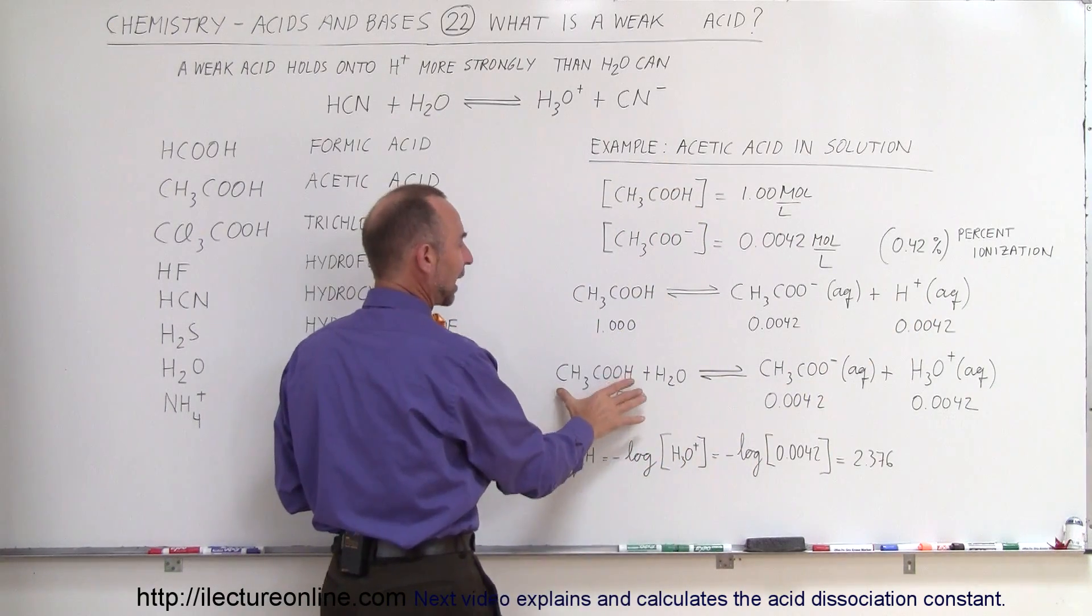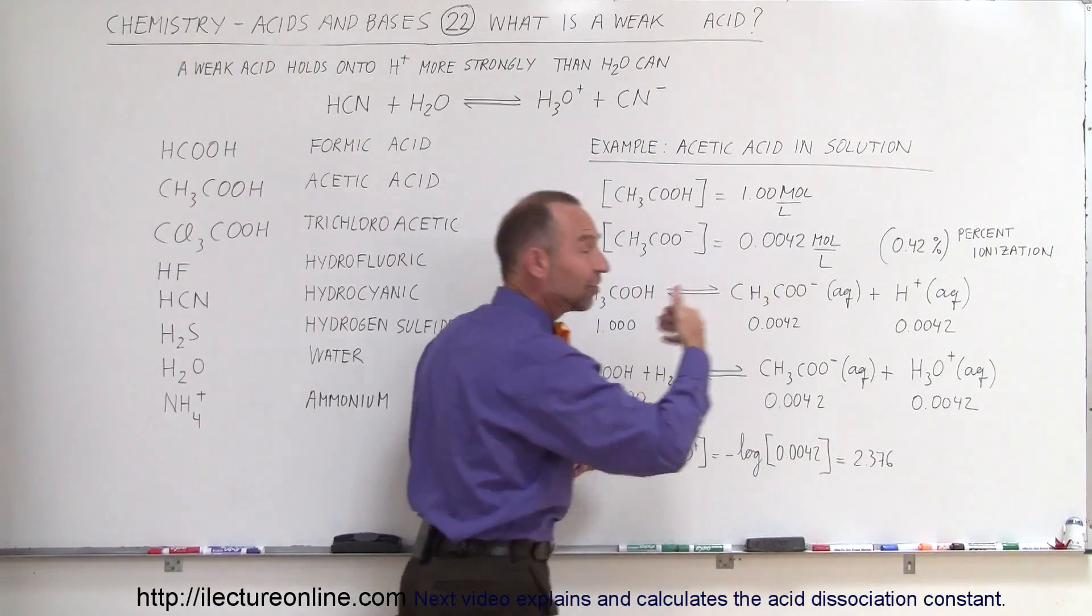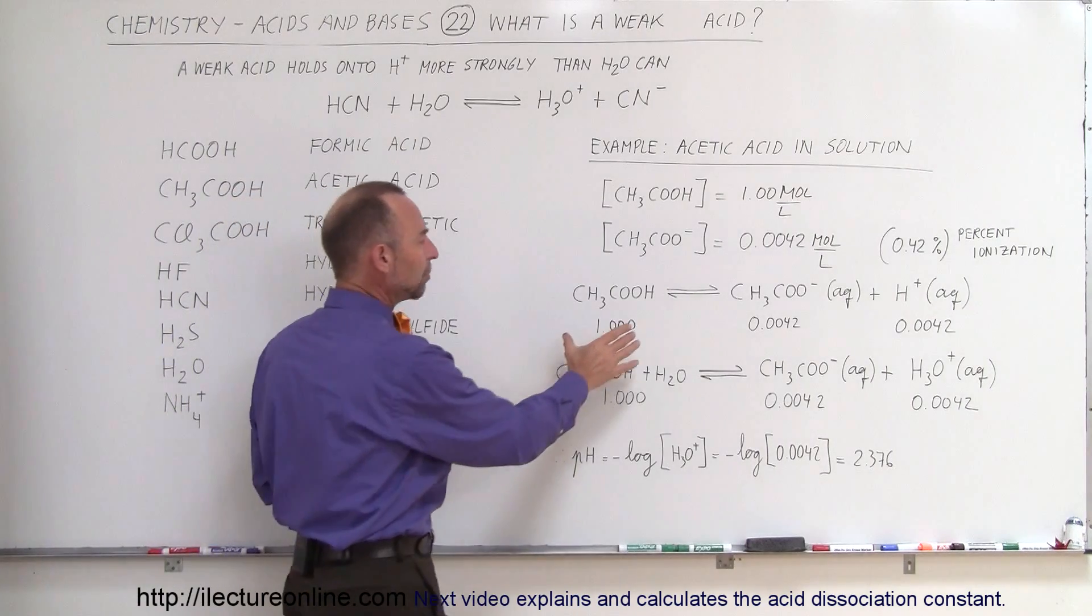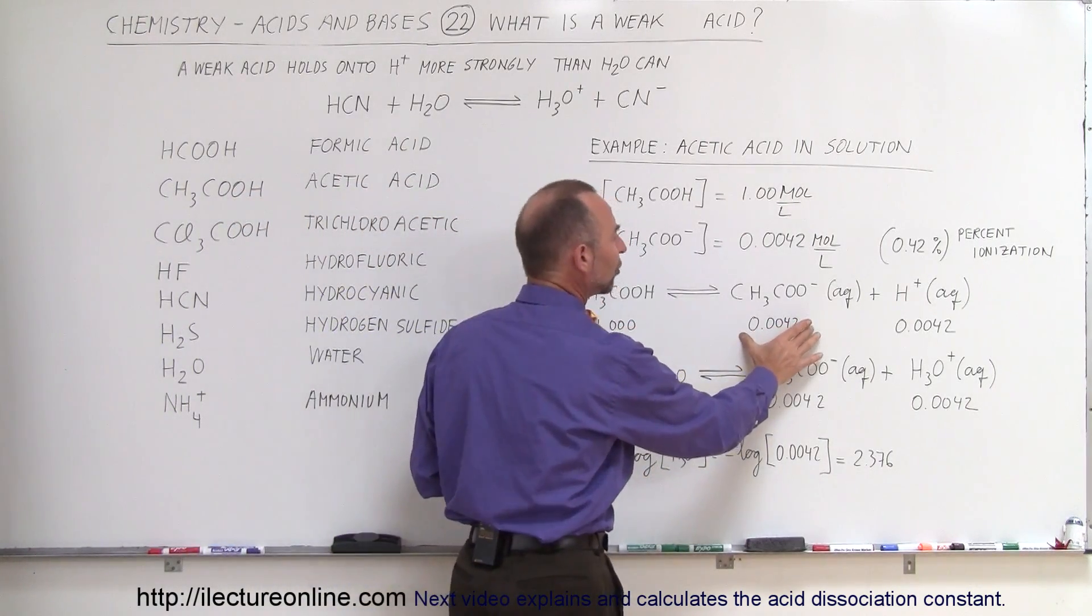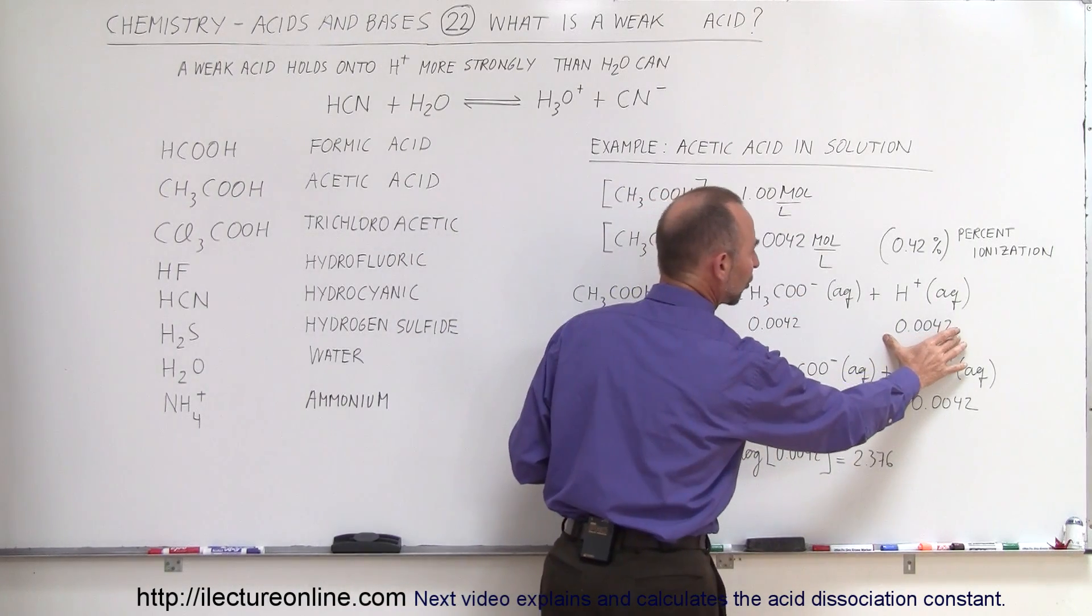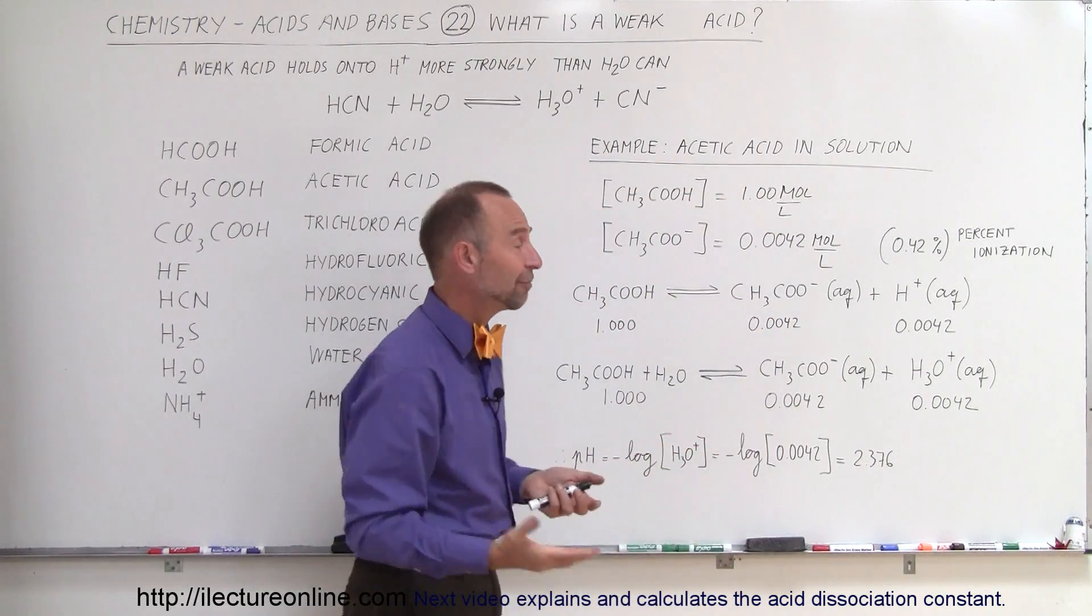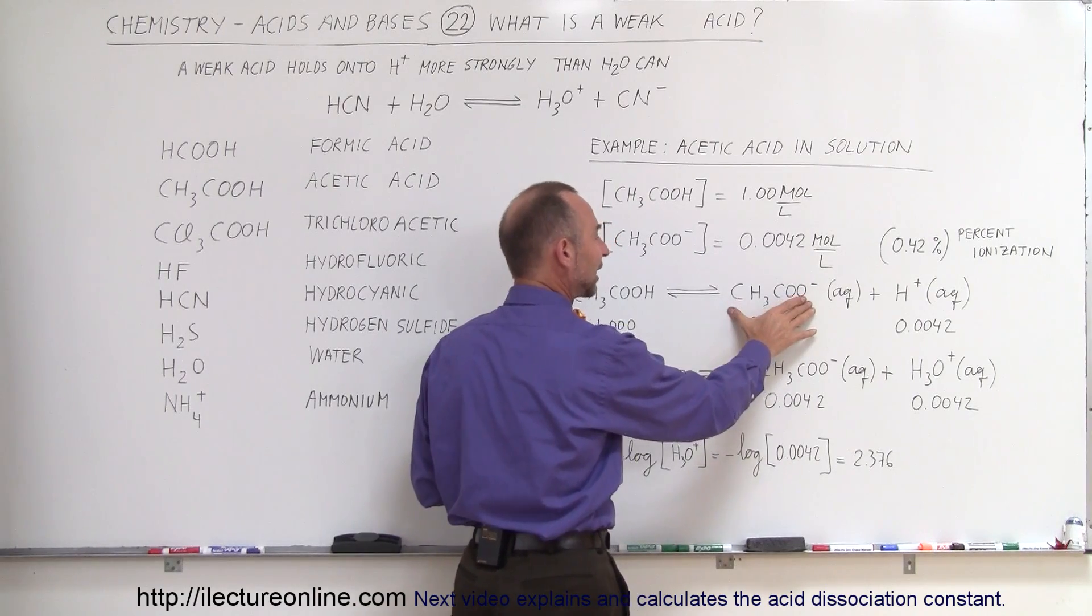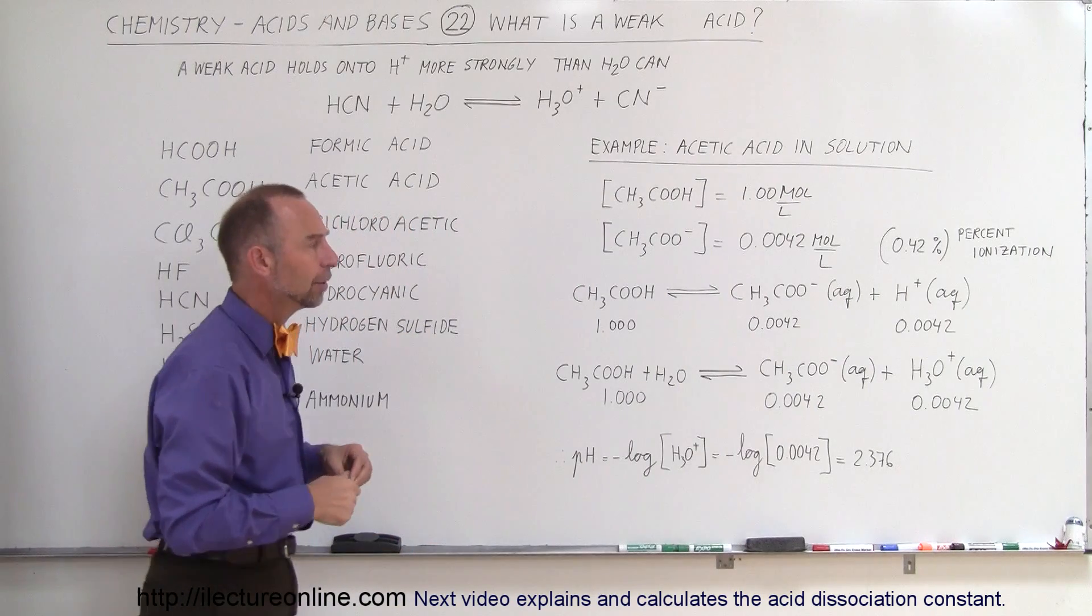But of course, in reality, acetic acid turns into the acetic ion and the hydronium ion, since the hydrogen ion will combine with a water molecule. So notice that with a 1 molar concentration of acetic acid, only 0.0042 molar for the acetic ion and 0.0042 molar for the hydrogen ion. Of course, the concentration of those two has to be the same because for every molecule of acetic acid, we end up with 1 ion of hydrogen.